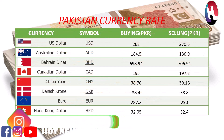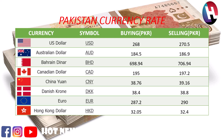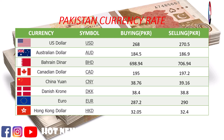US dollar buying price 268 rupees, selling price 270.5 rupees. Australian dollar buying price 184.5 rupees, selling price 186.9 rupees. Berrien Linar buying price 698.94 rupees, selling price 706.94 rupees. Canadian dollar buying price 195 rupees, selling price 197.2 rupees.